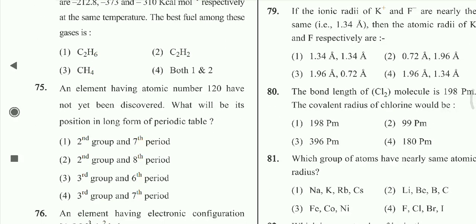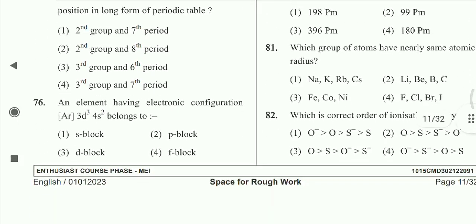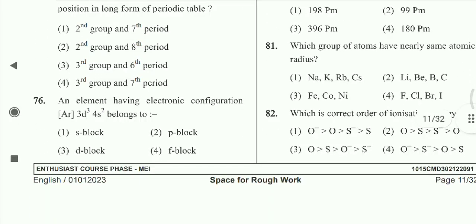Question 75: An element having atomic number 120 has not yet been discovered. What will be its position in the long form of the periodic table? It belongs to the second group and eighth period.